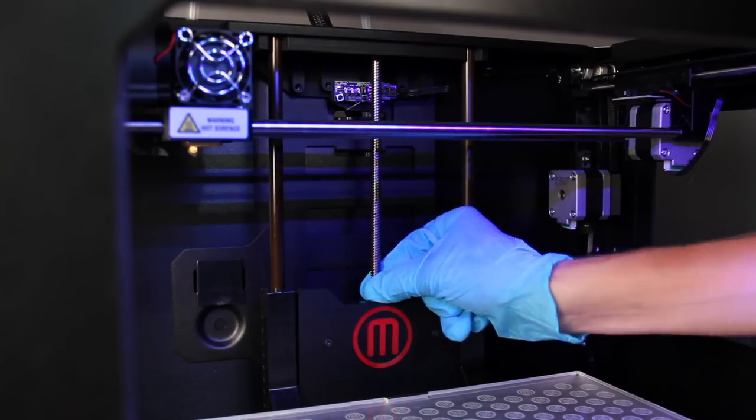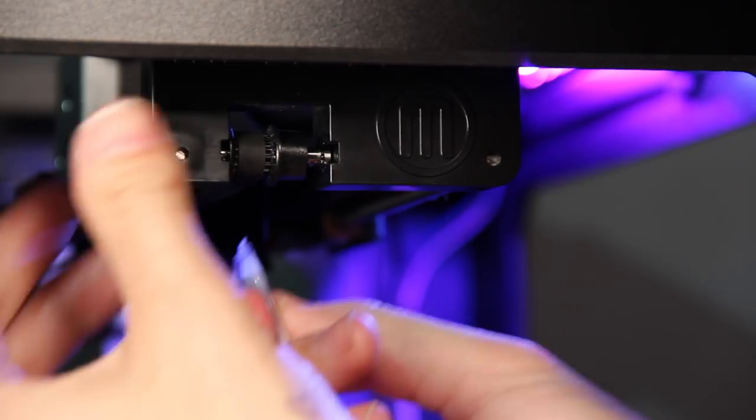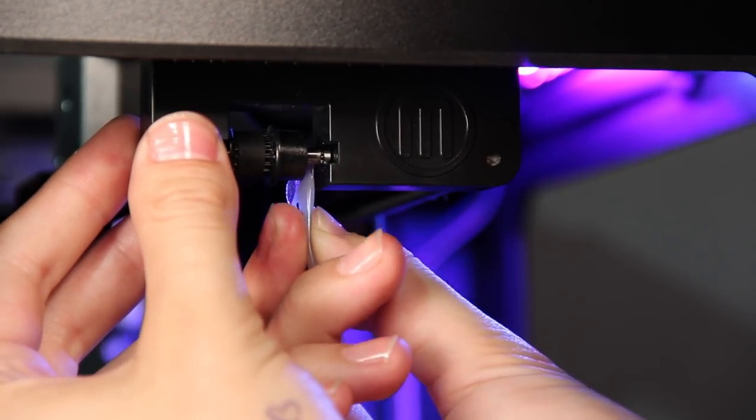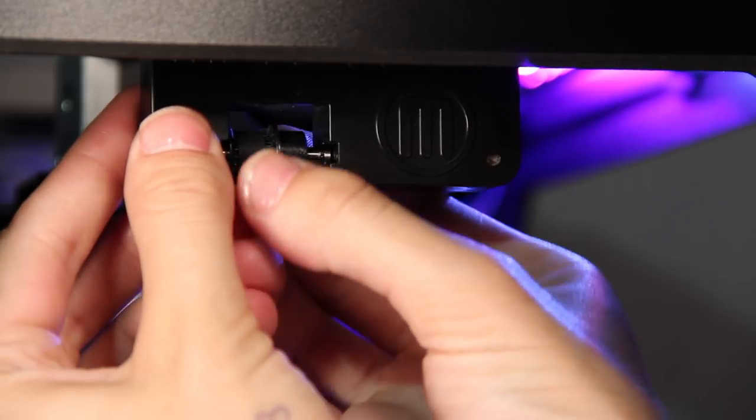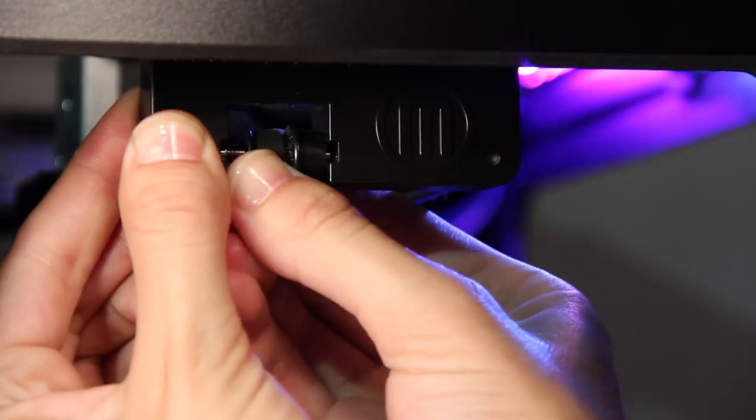You'll also want to lubricate the X-axis idler pulley, which is located here on the left side of your machine. Just squeeze a small amount of the PTFE-based grease directly on the tiny bit of exposed shaft here and move the pulley back and forth to spread it around.